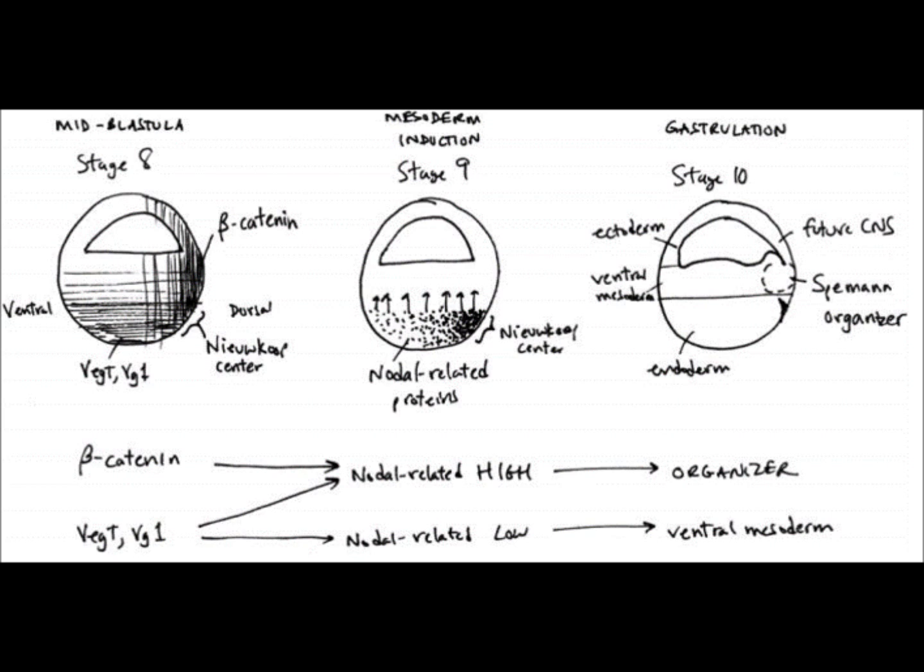This image above shows a couple of stages after cortical rotation has occurred. As you can see, beta-catenin is established in a gradient with the highest concentration at the future dorsal side. Maternal VEG-T and VEG-1 is also present in a gradient at the vegetal pole of the embryo.